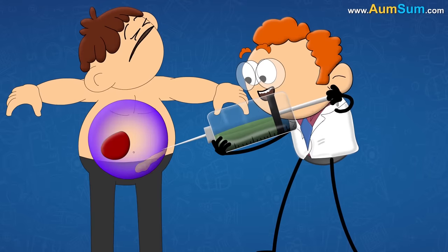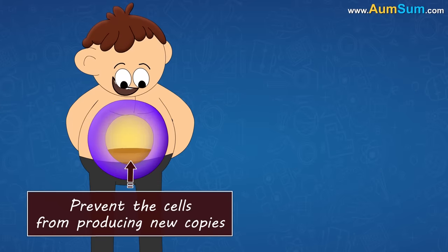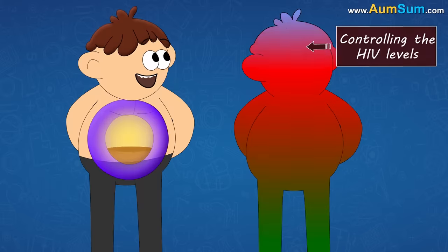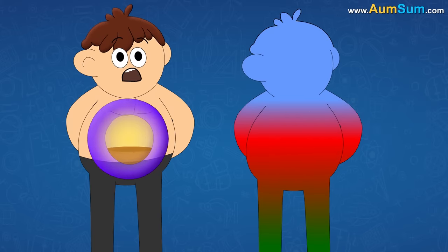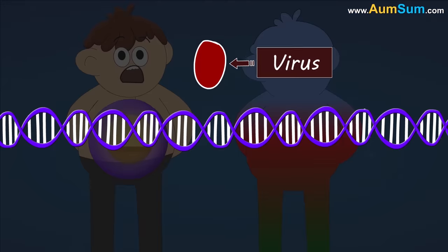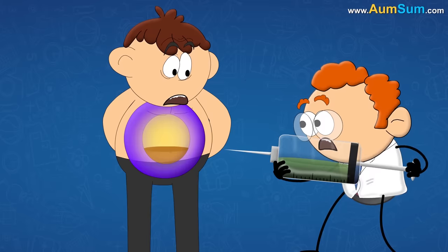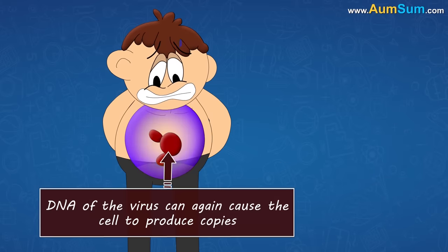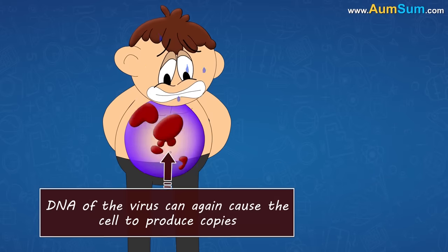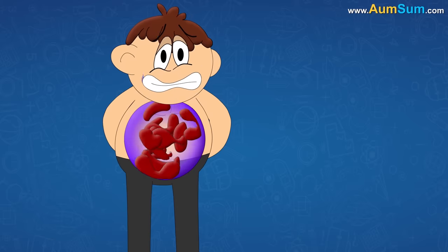Now, there are certain antiretroviral drugs that prevent the cells from producing new copies of HIV, thus controlling the HIV levels in our body. But it is hard to completely eradicate HIV because the virus integrates its DNA into our cell's DNA. Hence, if we stop taking the drugs, the DNA of the virus can again cause the cell to produce copies of the virus, and thus we are unable to control the level of HIV infected cells in our body.